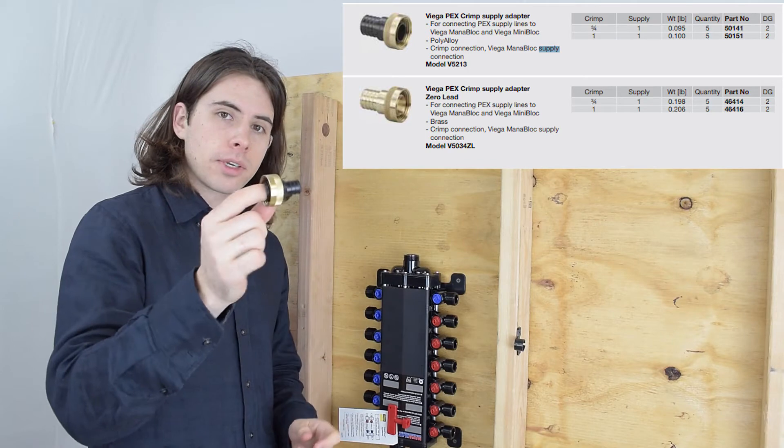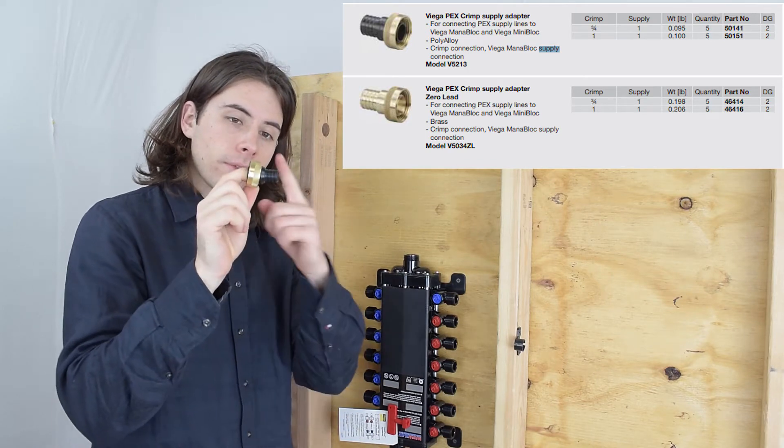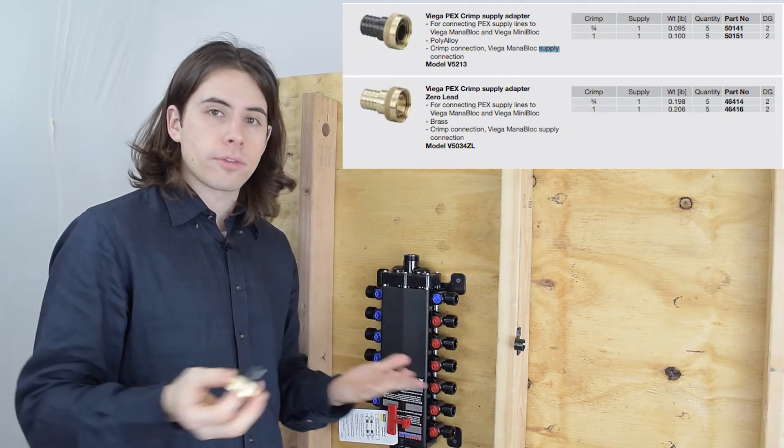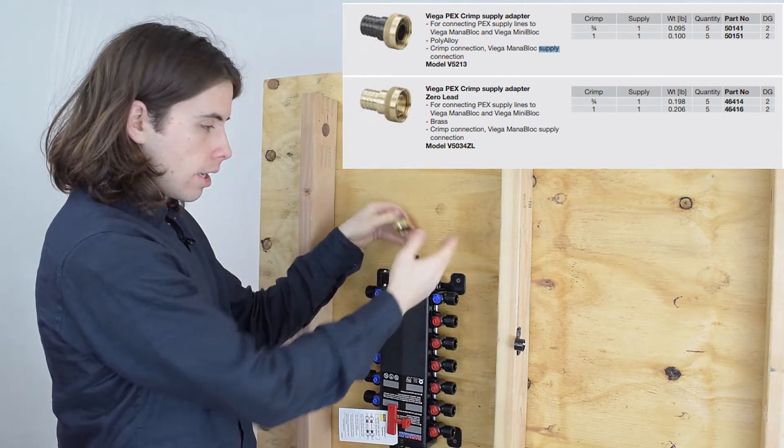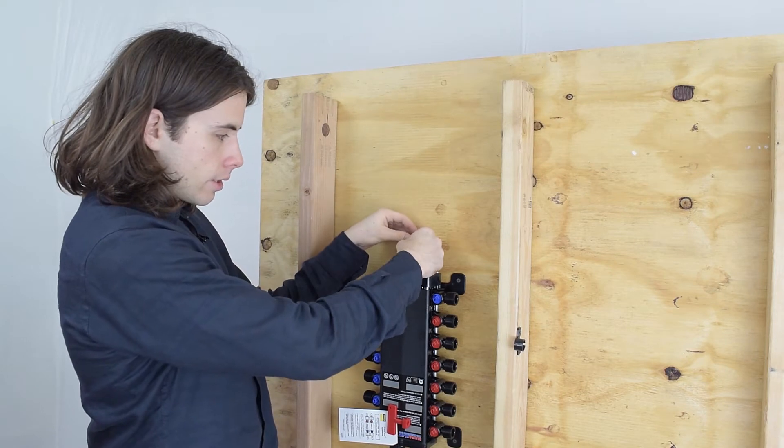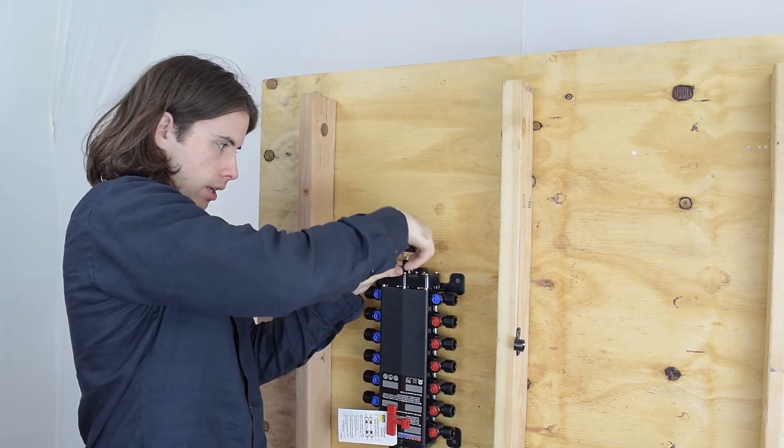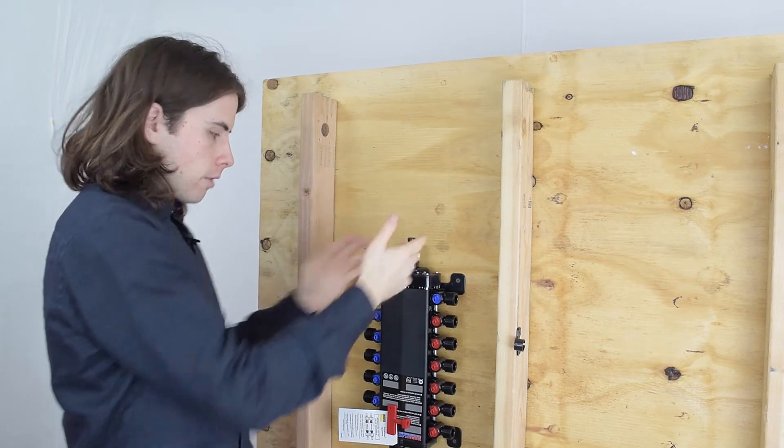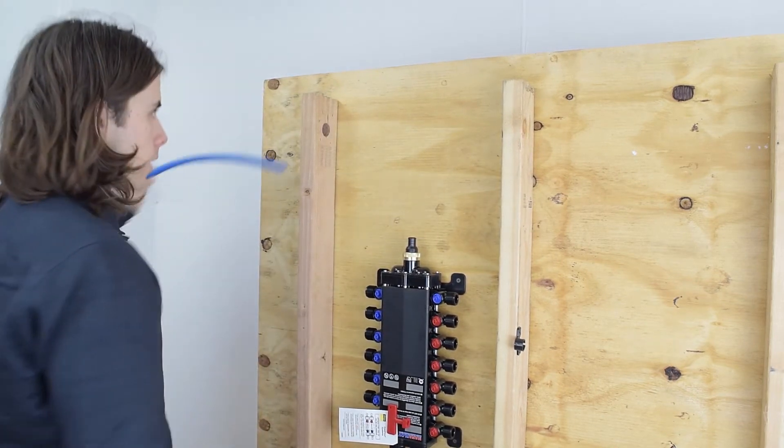I purchased a crimp connection that's three-quarter inch for fitting PEX tubing. I know I have crimp tools, so that's why I purchased this one. But there's a lot of different connection types you can buy. It's very easy - you just screw it on and then once you're ready to run your PEX, you make your crimp connection here.